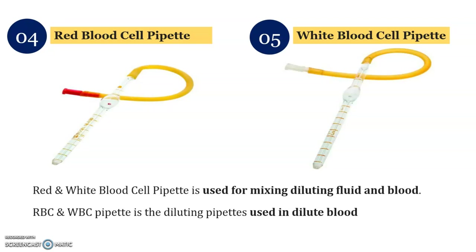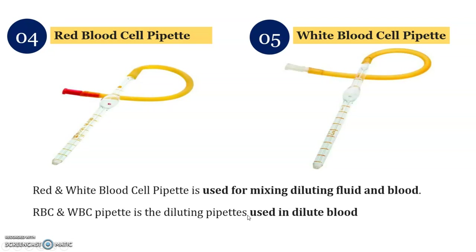Think about what these spots are — how do you identify which is the RBC pipette and which is the WBC pipette? With the help of the mouth sucker, you suck the blood from the finger, and the red marking indicates the RBC pipette while the other is the WBC pipette. These two pipettes are used for diluting the blood and are also useful for diluting other fluids.